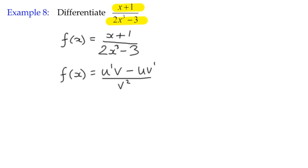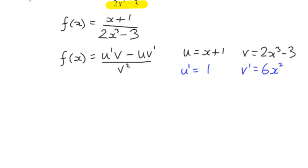That's the rule that we're given, and we have to define what u and v are. It is important in this case that u is always the numerator of the fraction. So u is x plus 1, and v is 2x cubed minus 3. Other than that, we're doing the same process. We're differentiating each of the terms u and v, doing it carefully, and then substituting these terms back into the formula.